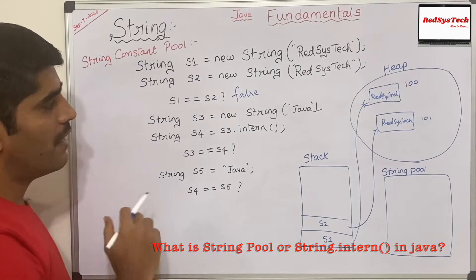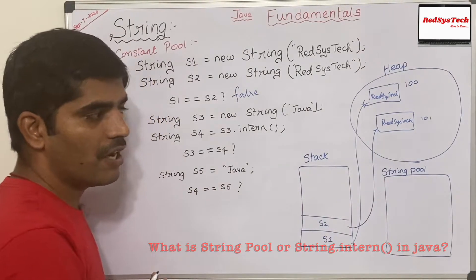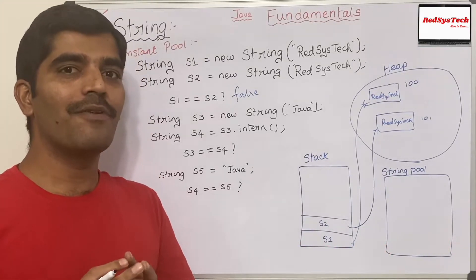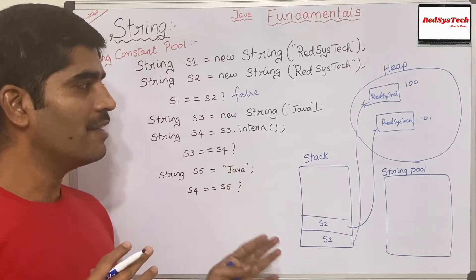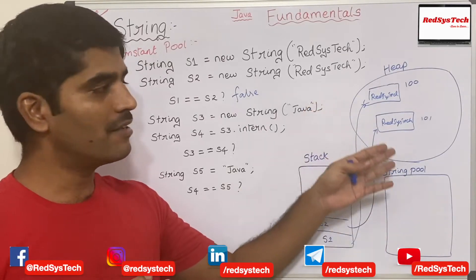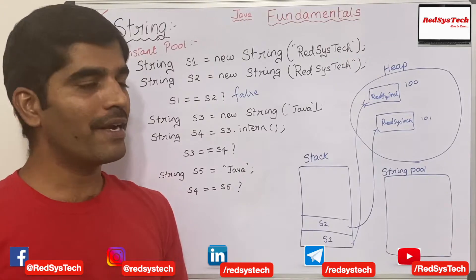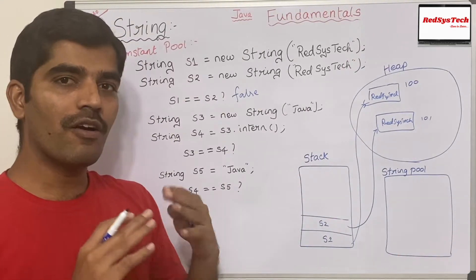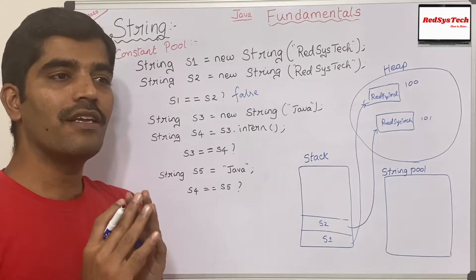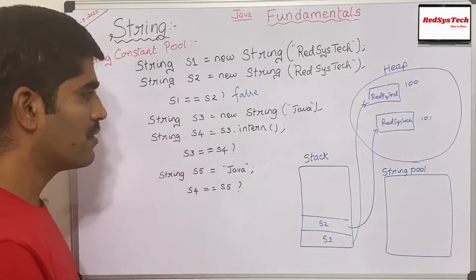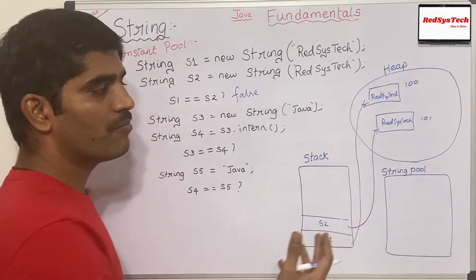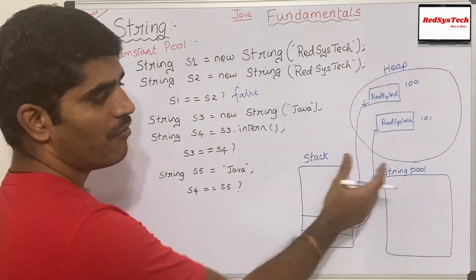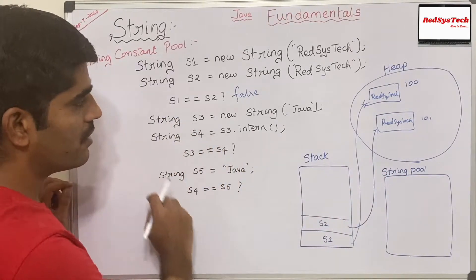Now, what is the String Pool in Java? Since String is a special class in Java, they don't want to create the same String multiple times in heap memory. To avoid that, they want to maintain a single unique copy for any distinct String value. That is what they call the String Pool — a pool of unique, distinct String objects. Let's see how it actually works in code.